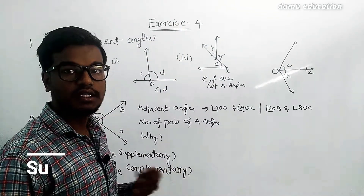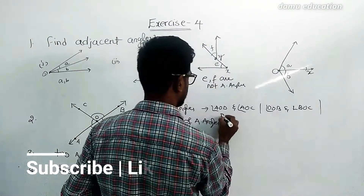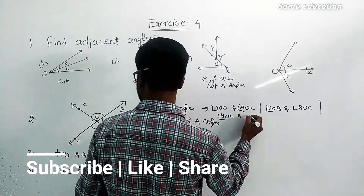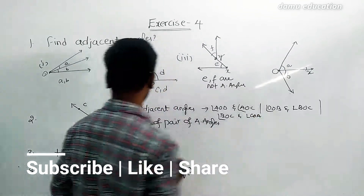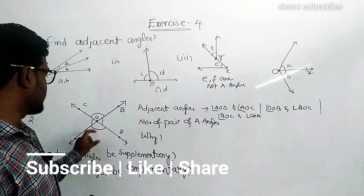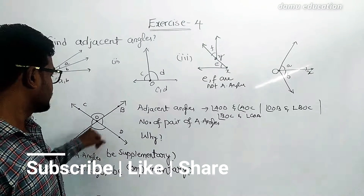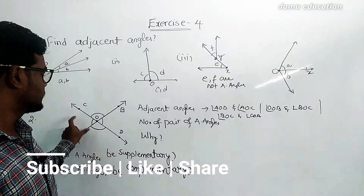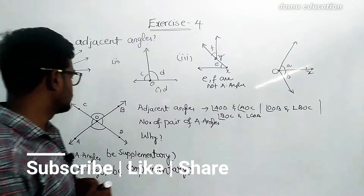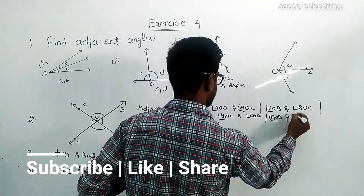Next, angle DOB and angle BOC are two adjacent angles. Then angle BOC and angle COA are adjacent angles. The remaining pairs are angle AOD and angle AOC, and angle DOB is another adjacent pair.